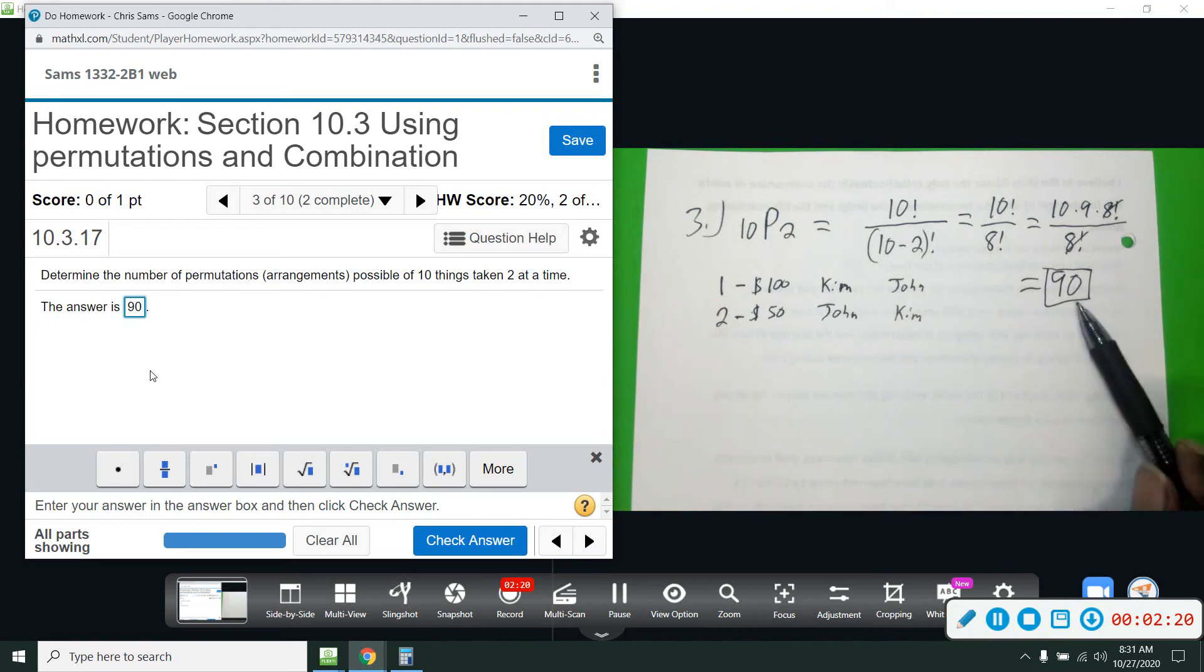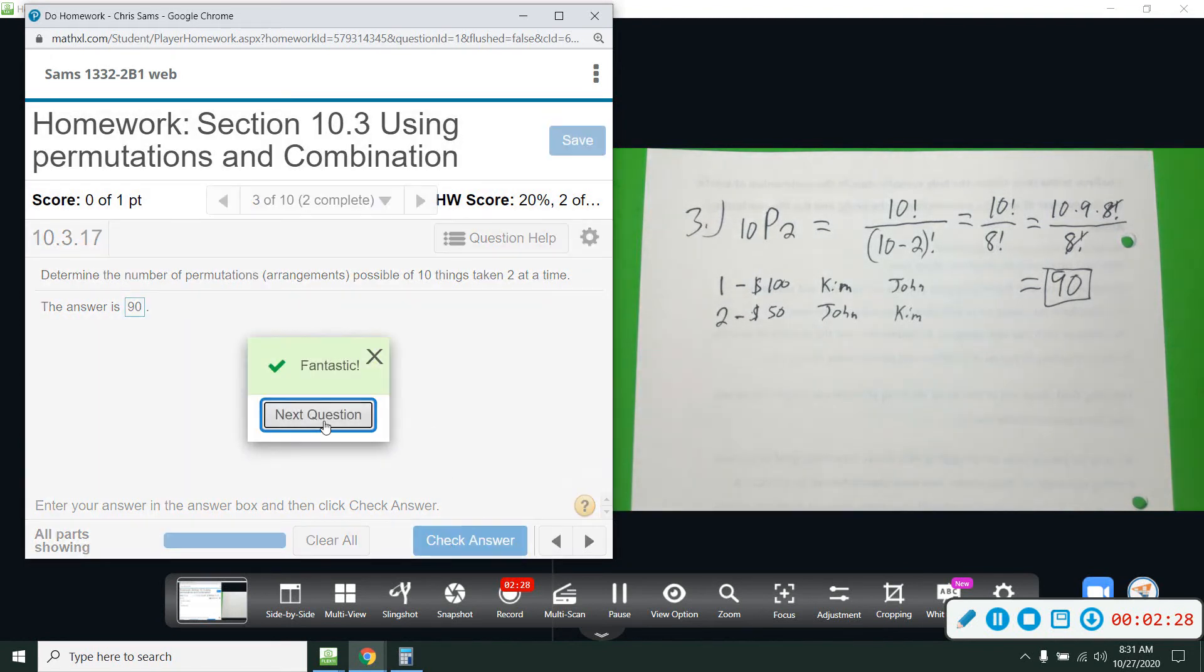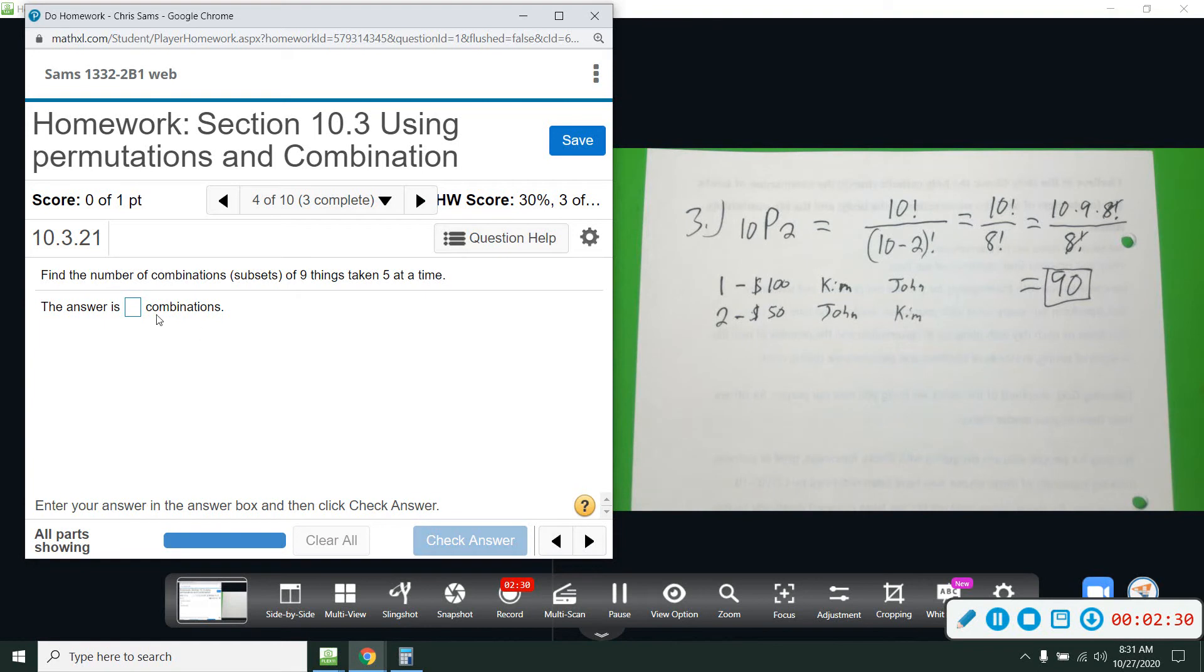So that's ninety if we could use the numbers, we could draw out ninety of them. Alright, number four. Find a number of combinations of nine things taken five at a time.